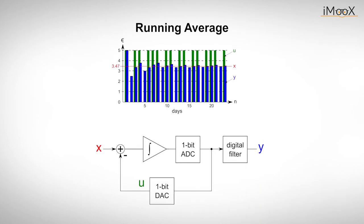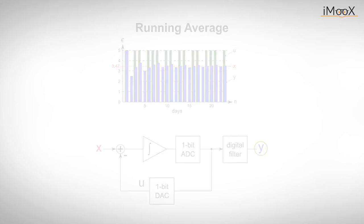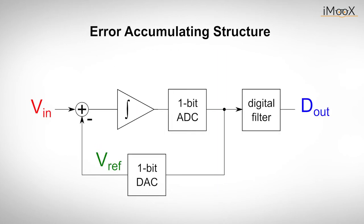The entire process can also be depicted in the flowchart where the price x is the input of the circuit, u is the occasional 5 euro bill and y is the average value the engineer has to pay for the coffee each individual day. Or, if we transfer the thought to an electronic circuit, x is the input voltage Vin, y the output value Dout of a 1-bit ADC and u is the output value of a digital-to-analog converter, which is either 0 or Vref. This traditional structure used to represent the functionality of a delta-sigma ADC is called error accumulating structure.